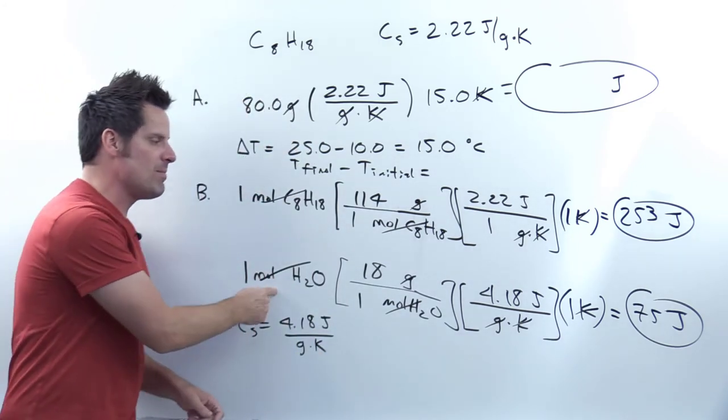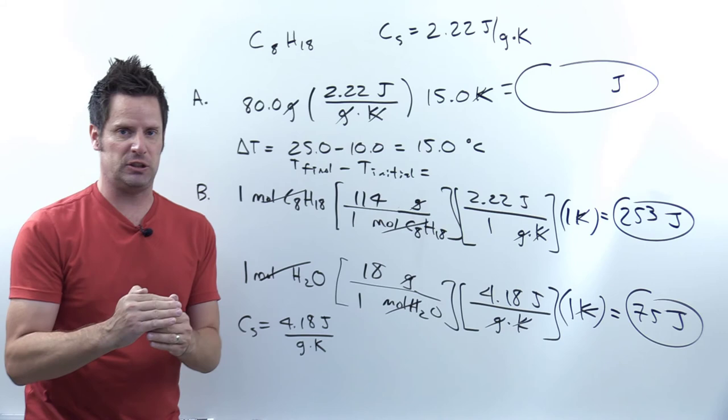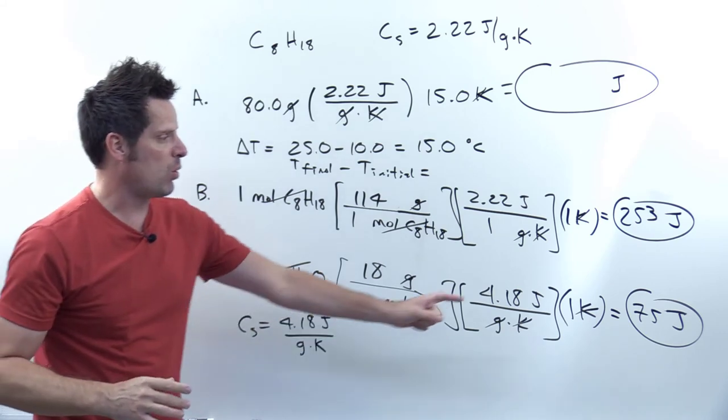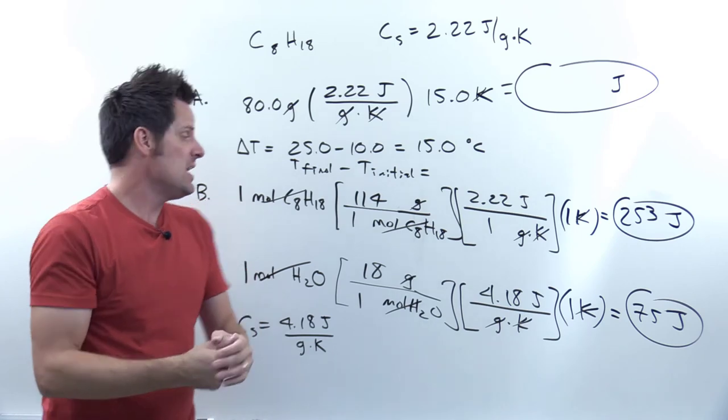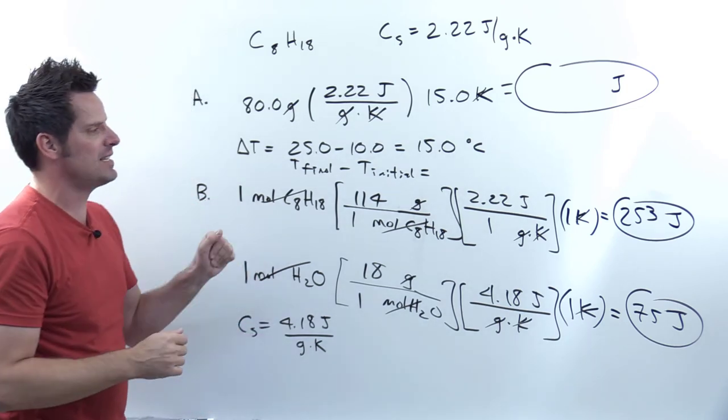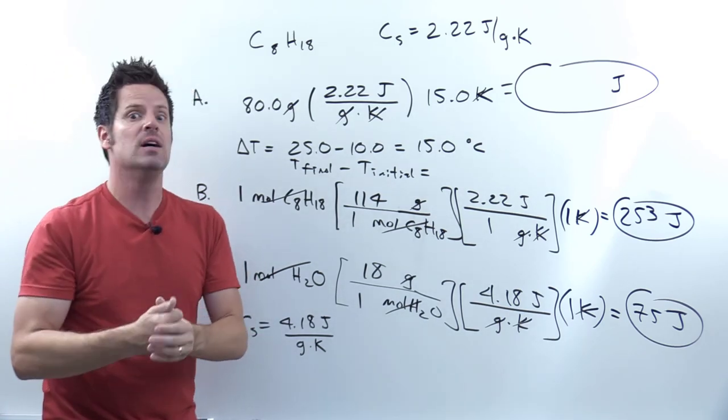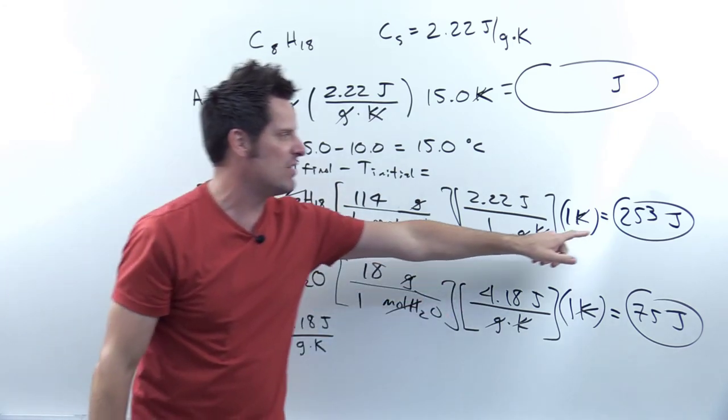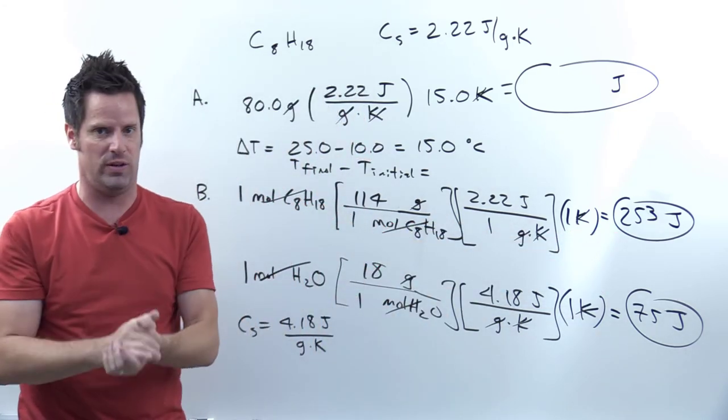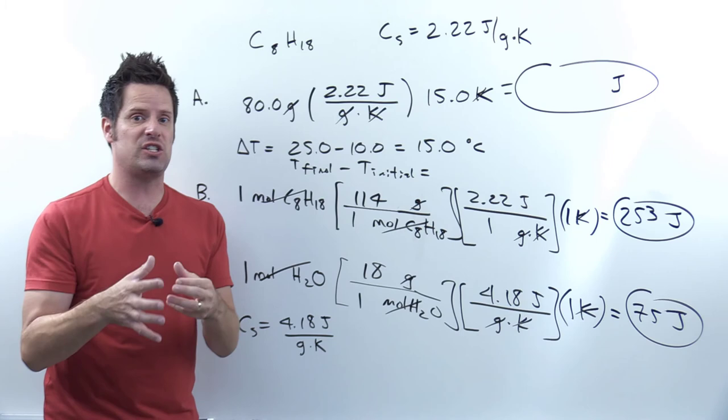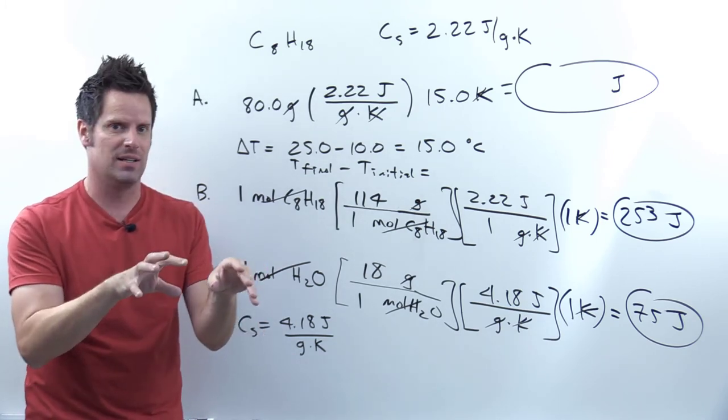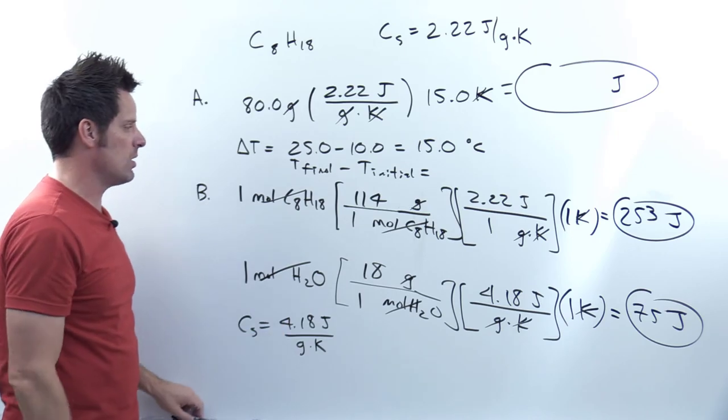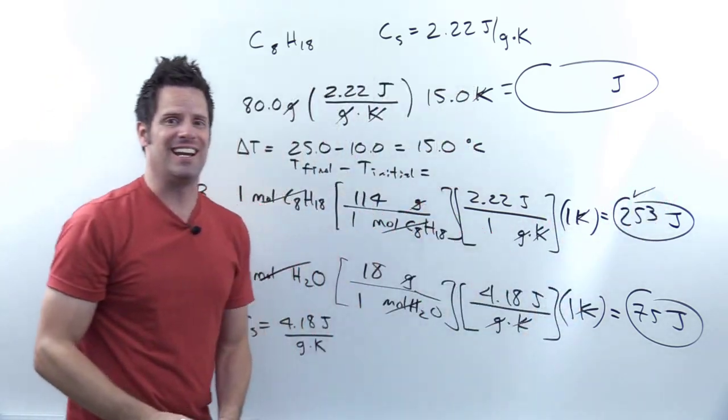So what that means is that if you had one mole of H2O and you wanted to raise its temperature by one kelvin, it would require an investment of 75 joules per mole. In contrast, if you had one mole of octane and you wanted to raise its temperature by one kelvin, it would require an investment of 253 joules. And again, we're not talking about combusting or igniting the octane, we're talking about just warming it. Which of these requires more? Yeah, it's the octane.